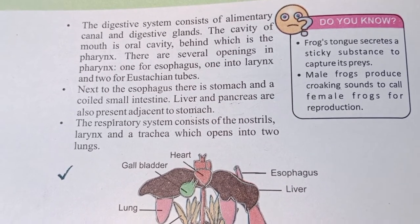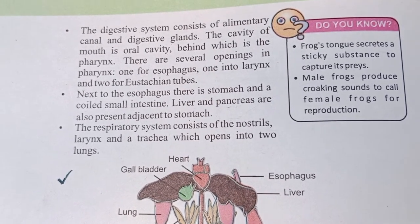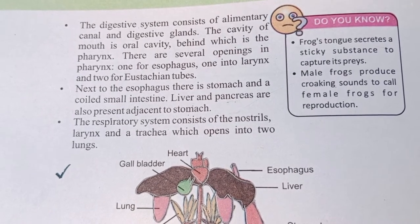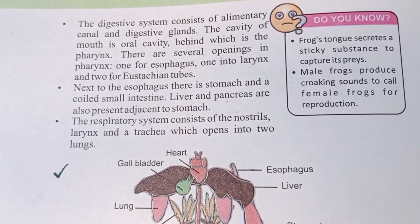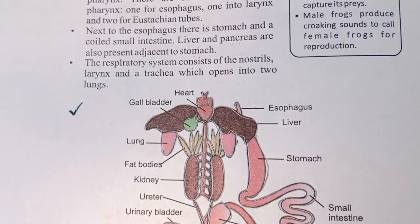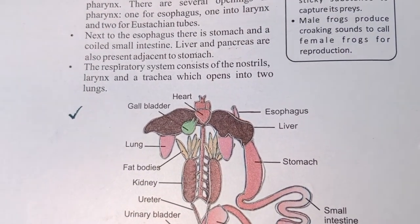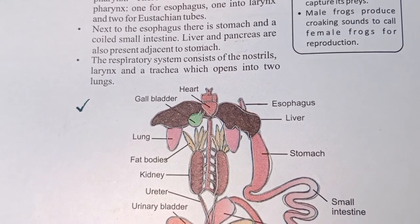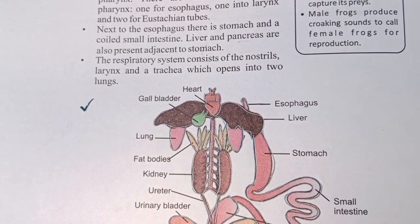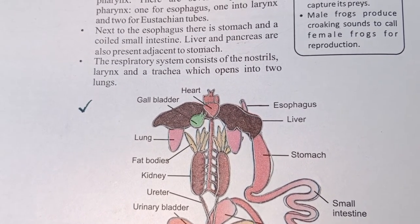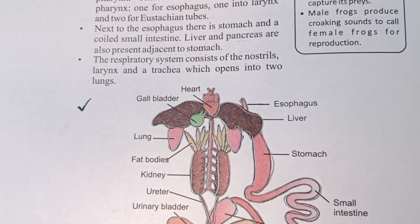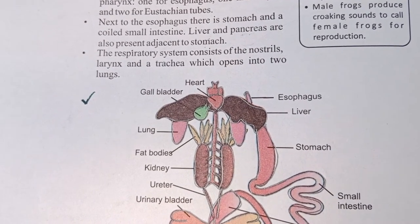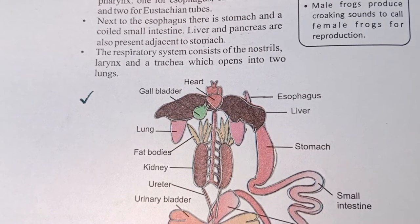The openings in the pharynx lead into the larynx and two Eustachian tubes. Beyond the esophagus there is the stomach, followed by the small intestine. The liver and pancreas are also present adjacent to the stomach.